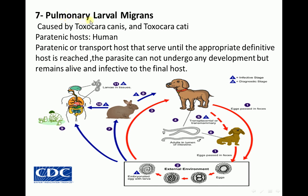Pulmonary larval migrans is caused by Toxocara canis and Toxocara cati. The paratenic or transport host is a host that serves until the appropriate definitive host is found.